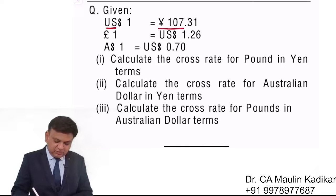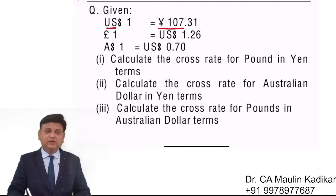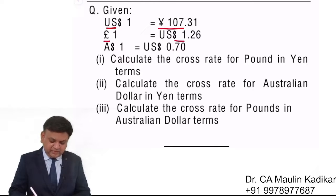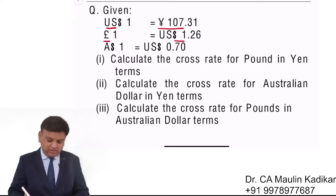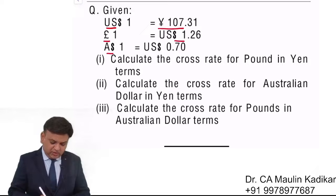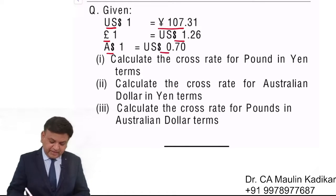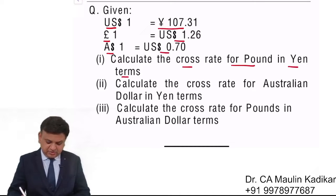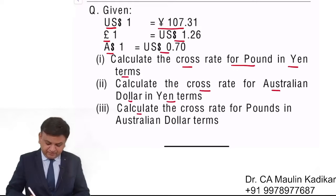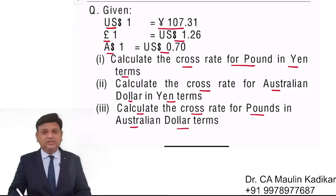Given: US dollar 1 is equal to 107.31 yen, 1 pound is equal to 1.26 dollar, and 1 Australian dollar is equal to 0.70 dollar. Calculate the cross rate for pound in yen terms, the cross rate for Australian dollar in yen terms, and the cross rate for pound in Australian dollar currency.